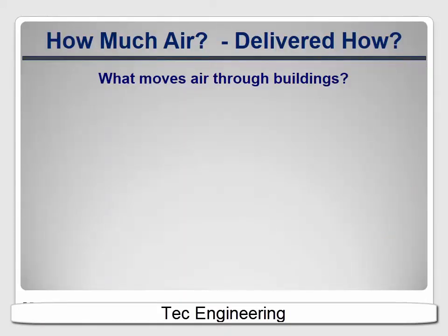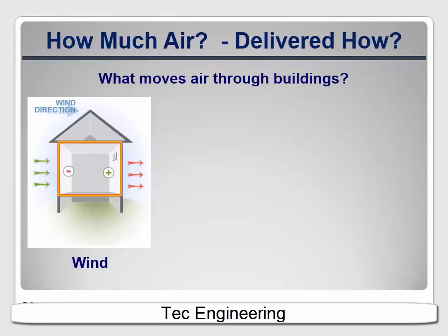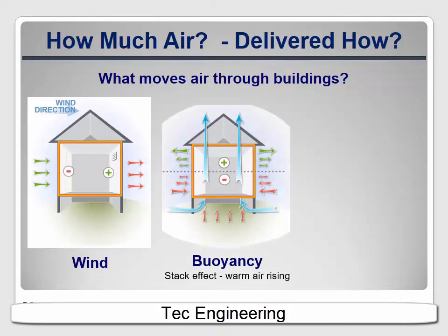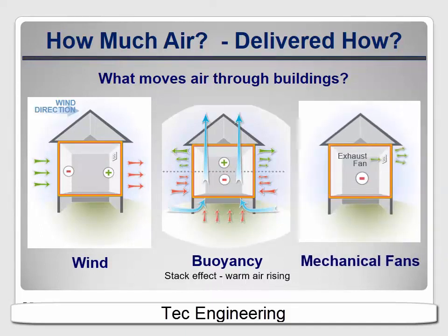To appreciate why mechanical ventilation is important, it's helpful to understand the different forces that push and pull air through houses. An obvious one is wind — wind is moving air, so of course it will find its way in through leaks. Another is the buoyancy of warm air. Warm air is light, so it rises. When it's warm inside and cold outside, the house acts like a big chimney, with the warm air rising out of holes at the top. And another is mechanical fans, which can push air out or pull it into a house. Mechanical fans are the most controllable of the three, and we can use them to ensure adequate airflow. Let's take a closer look at the other two to understand why they aren't as reliable.